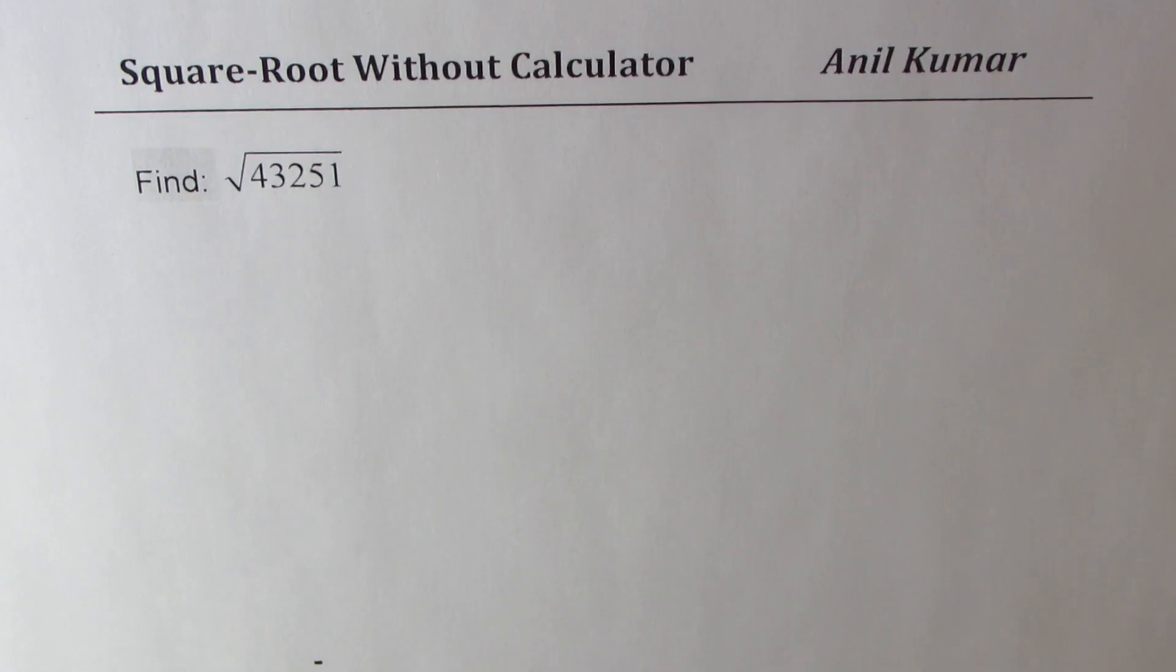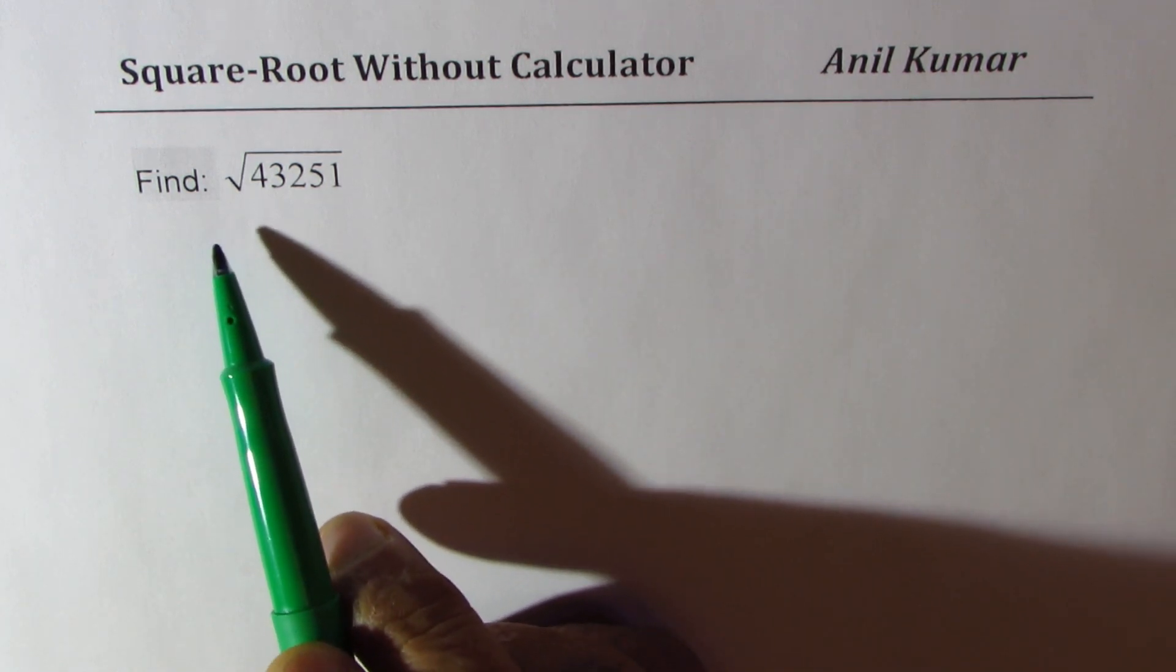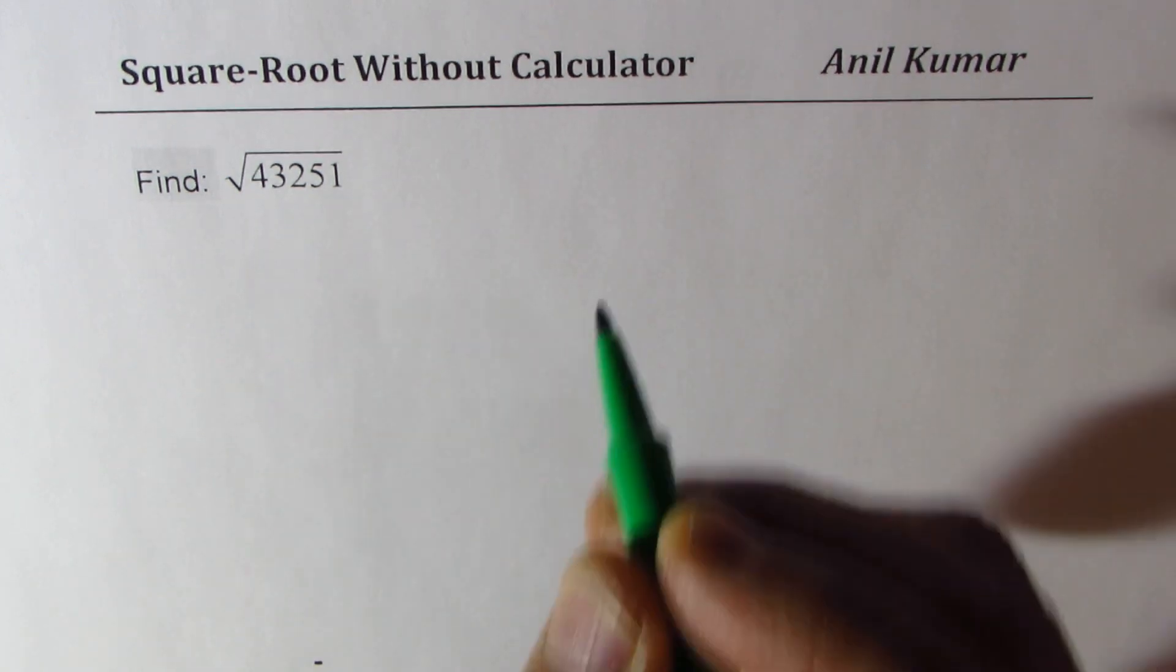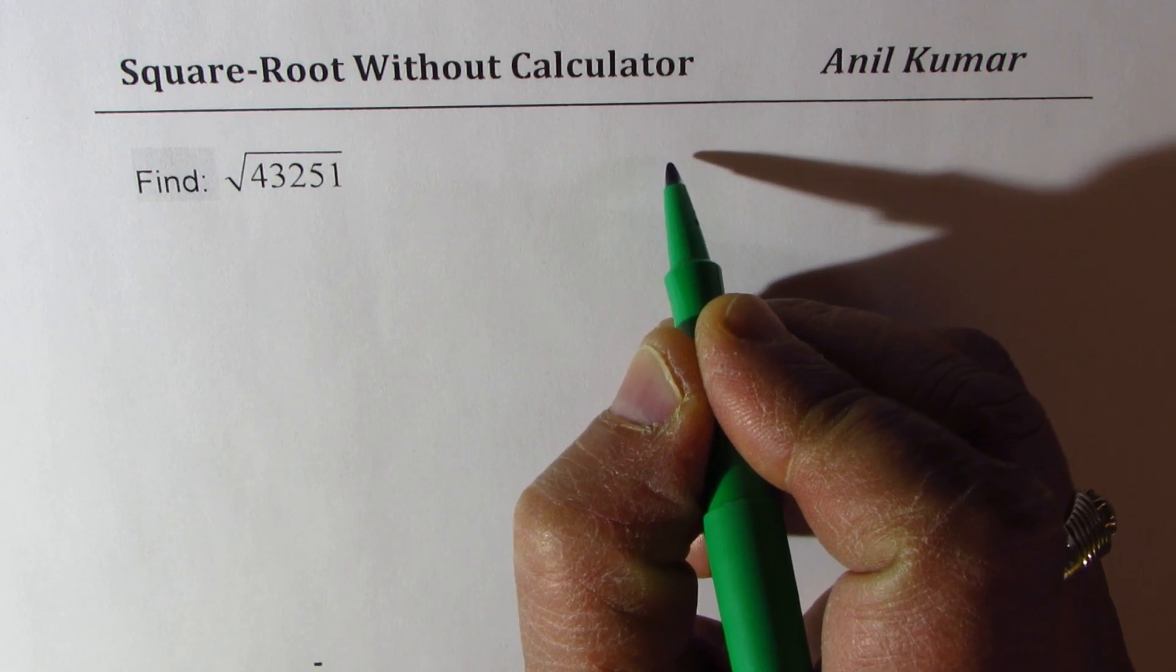I'm Anil Kumar. Let me thank all the viewers and subscribers for taking keen interest and posting questions. Now here is a request from one of our subscribers who wants to know how to find square root of five digit numbers. So I've taken up an example here. We'll find square root of 43251. Let's see how to do it.